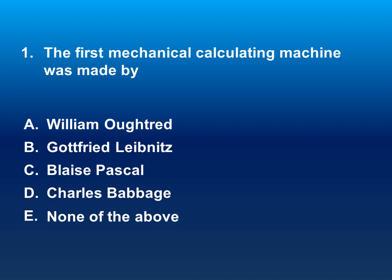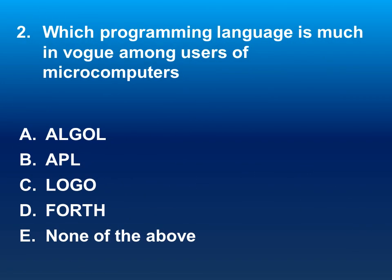The first mechanical calculating machine was made by whom? Guess your answer and write it down on paper. The correct answer is C — Blaise Pascal.